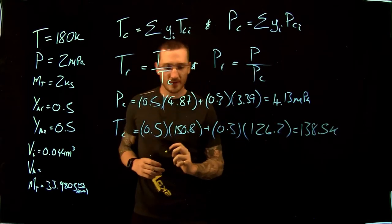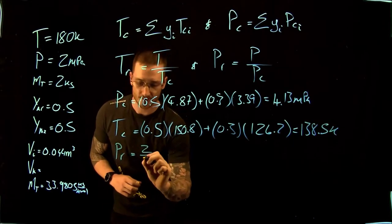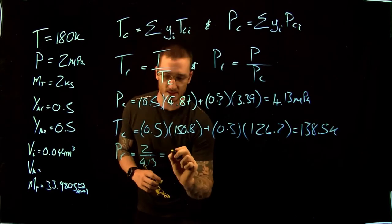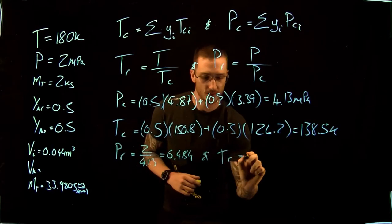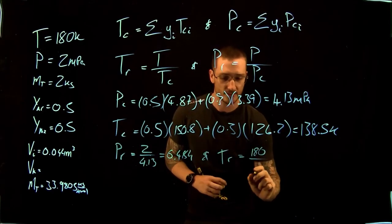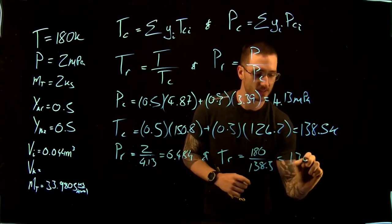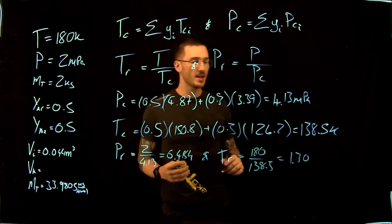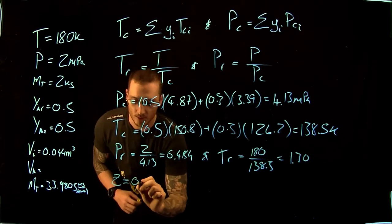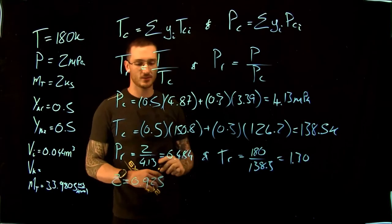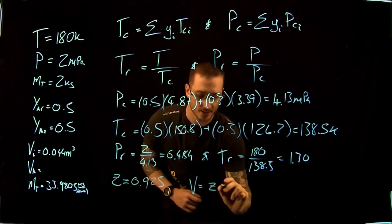We find our pseudo reduced pressure: 2 MPa divided by 4.13 MPa, giving us 0.484. Our pseudo reduced temperature is 180 divided by 138.5, giving us 1.30. With these values we can read from the chart that our Z value is equal to 0.925.